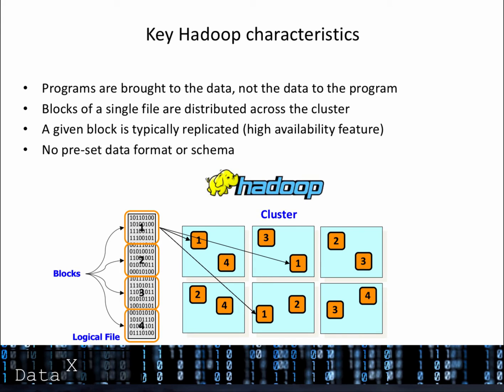I'll spend a few minutes focusing on some of Hadoop's key characteristics. In the Hadoop world, programs are brought to the data, not vice versa. The Hadoop distributed file system breaks a single file into blocks and automatically distributes these blocks across the cluster, so applications can process data in parallel. To promote high availability and recovery from failures, a given block of data is typically replicated across multiple nodes. The Hadoop distributed file system also doesn't require a preset format or schema for stored data, a flexibility that appeals to many firms analyzing large volumes of various types of information.